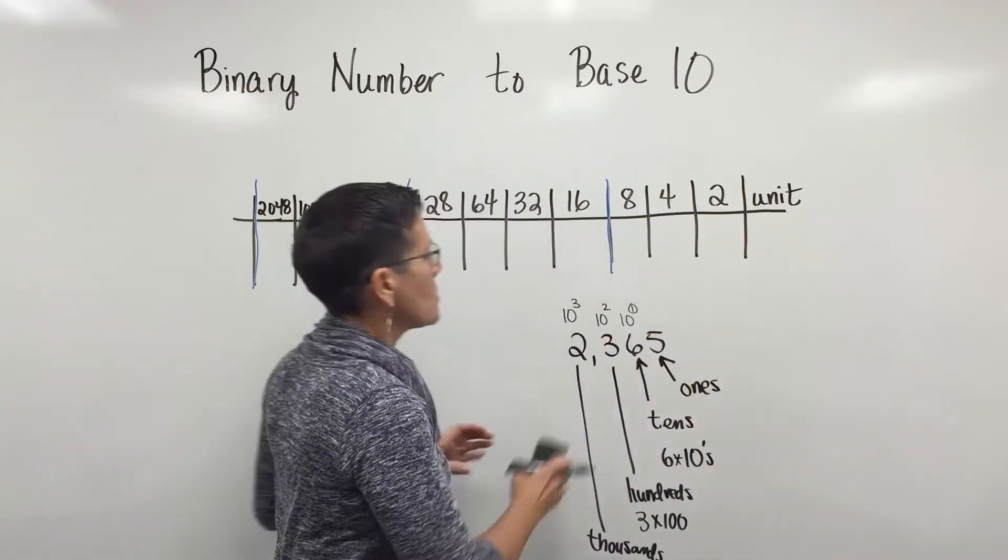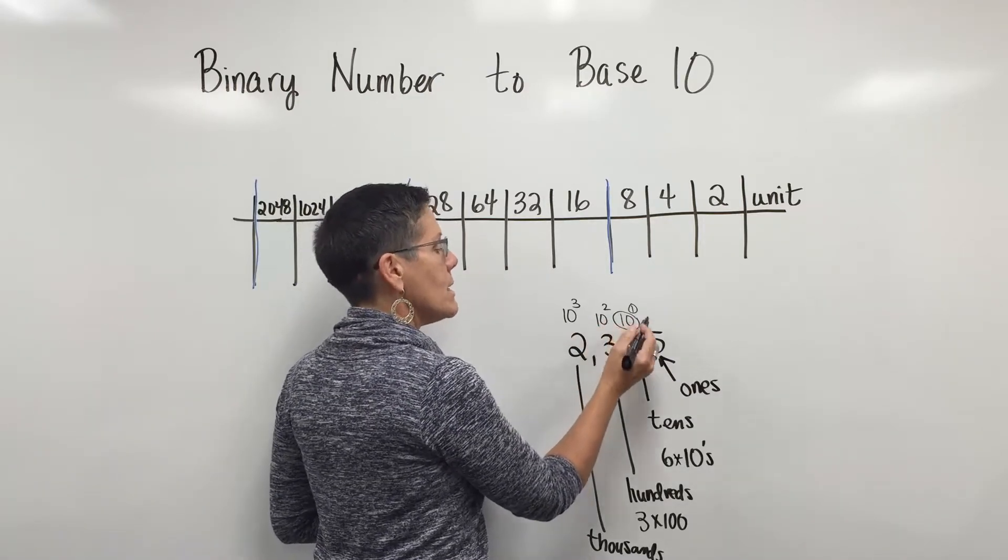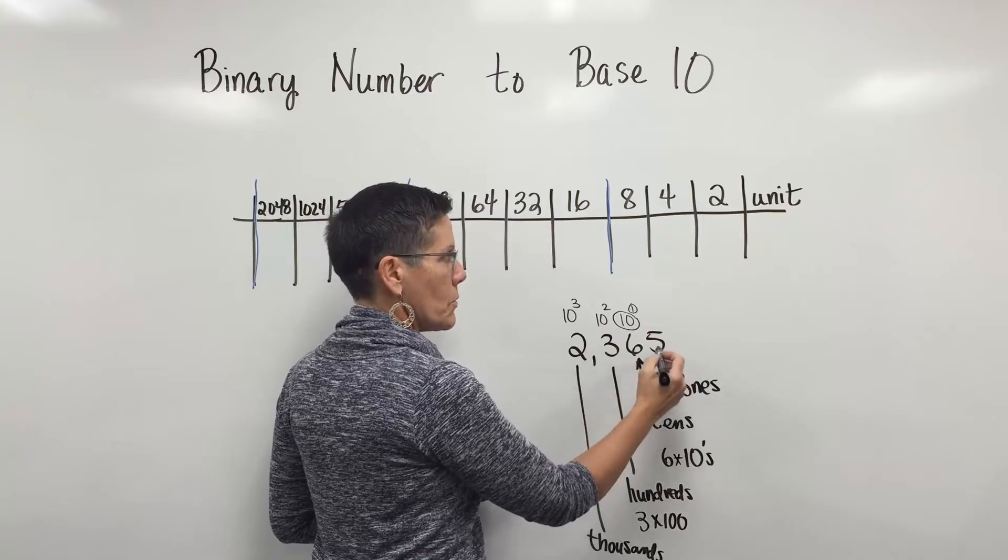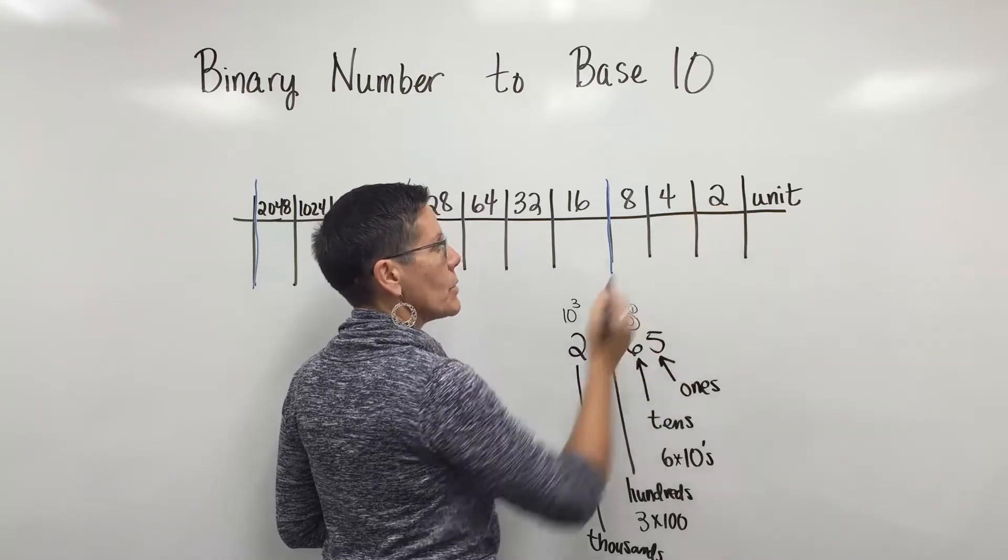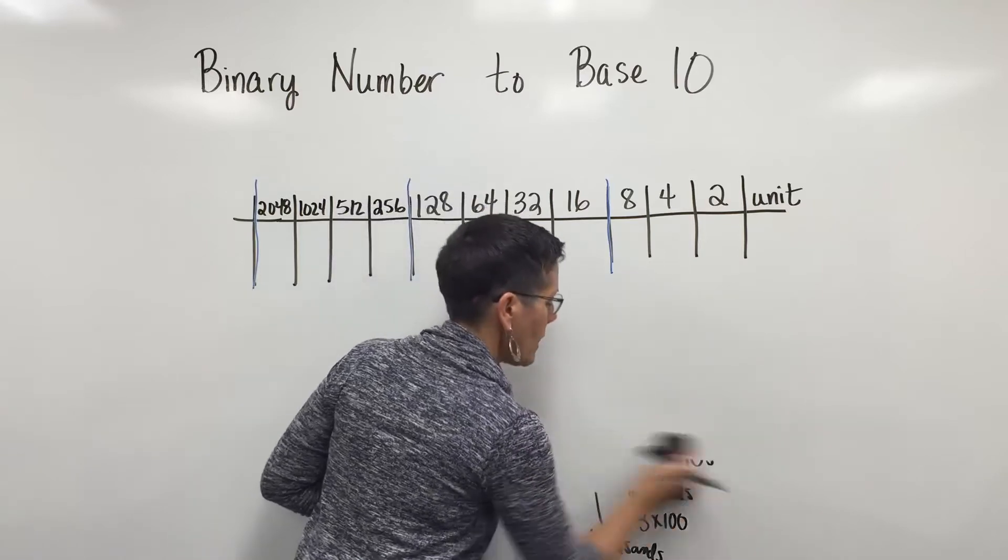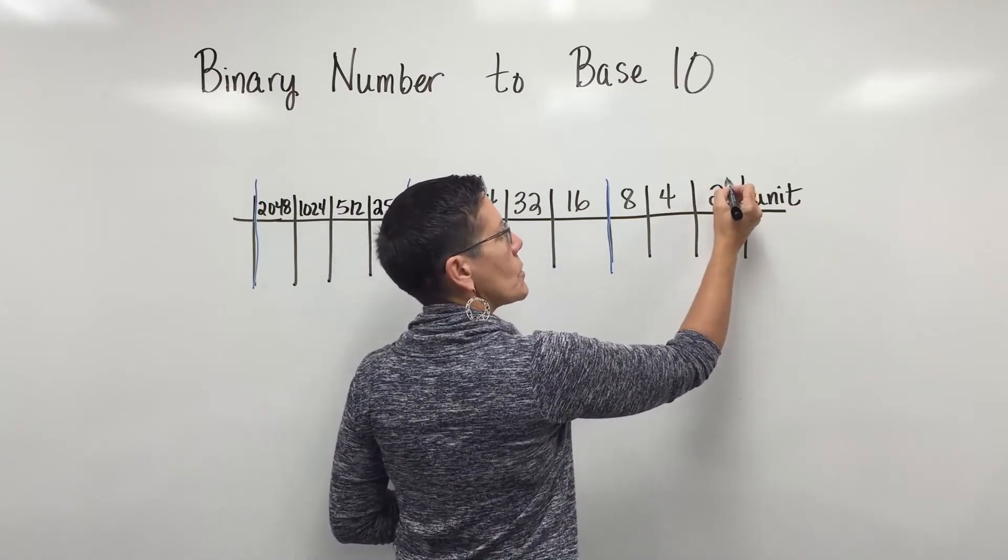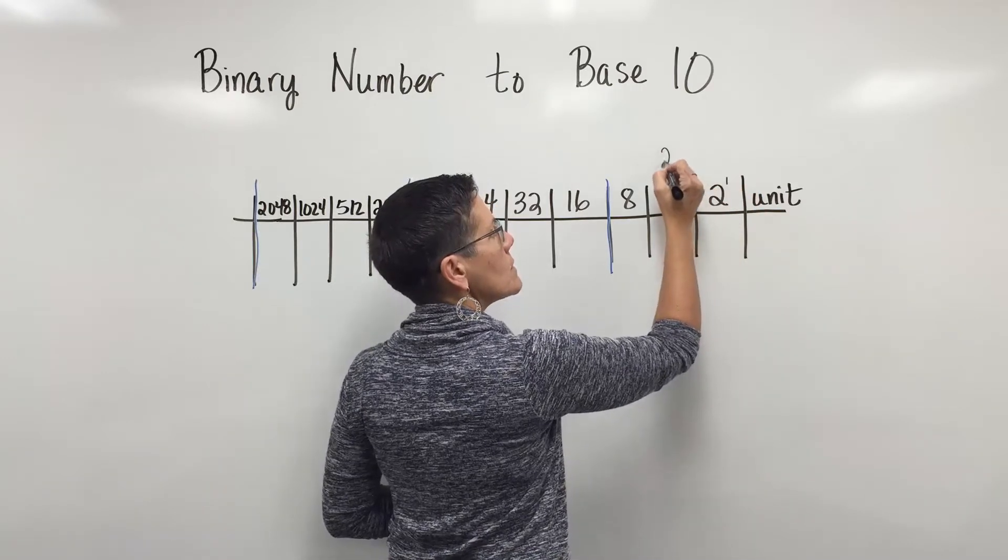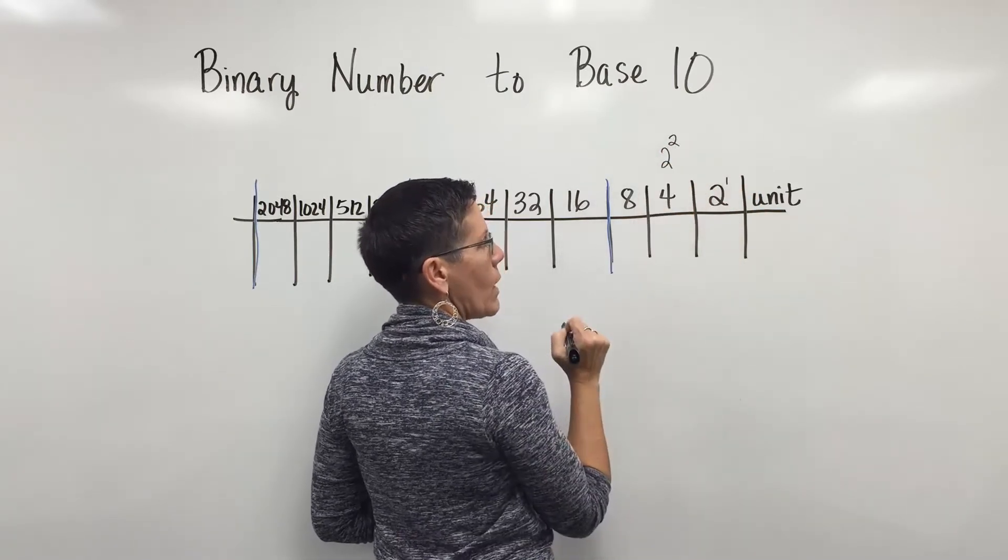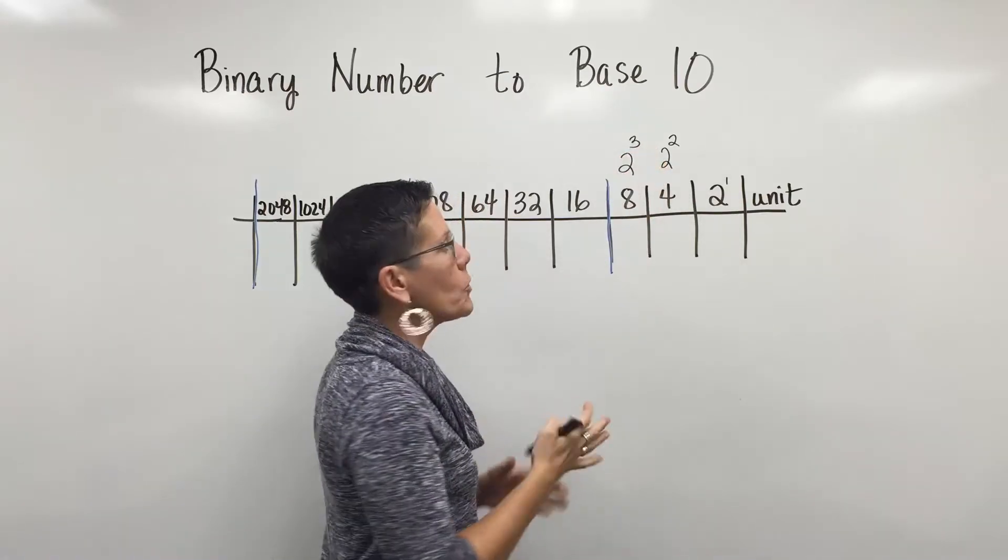The binary numbering system is like this. Base 10 only uses the digits 0 through 9. A binary numbering system uses the digits 0 and 1, and beyond the units position, this is representative of 2 to the first power. This spot is 2 to the second power, which is 4, and 8 is 2 to the third power.